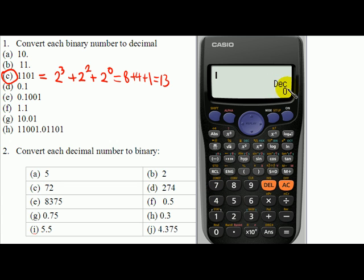If you want a binary number, you must press BIN. BIN is here. Press BIN, and now I enter the number 1101 and press equal. So now I have binary number 1101.